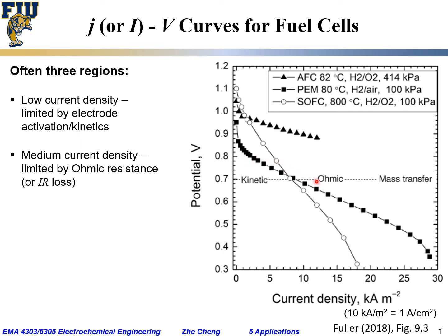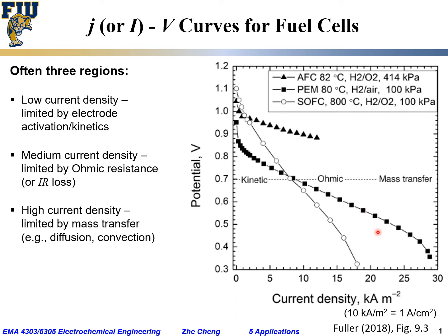In the intermediate current density region, there is a more or less linear relationship between cell potential and current density. This linear region is limited by ohmic resistance — the IR loss — where I is current and R is resistance, representing voltage loss due to ohmic resistance, mostly through the electrolyte.